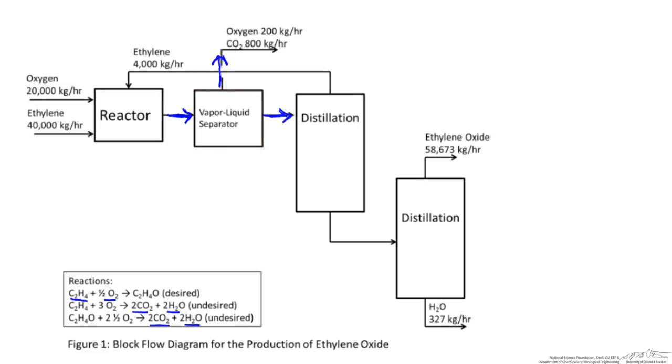The ethylene, ethylene oxide, and water are sent to a distillation column, where the ethylene comes out of the distillate, because it's more volatile than the ethylene oxide and water, which are sent to the bottoms. Ethylene is recycled back to the reactor to help increase the overall conversion.